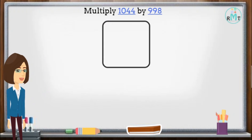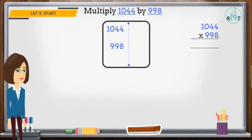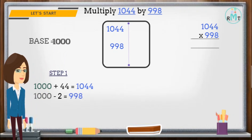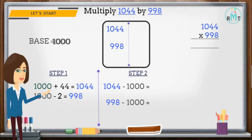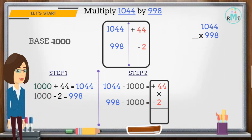Let's take one more example: multiply 1044 by 998. Step 1: first we have to select the base. Since both numbers are close to 1000, our base is 1000. Step 2: subtract 1044 and 998 from the base, which is 1000. The difference between 1044 and 1000 is plus 44. Similarly, the difference between 998 and 1000 is minus 2. Now we multiply plus 44 with minus 2, so we get minus 88.